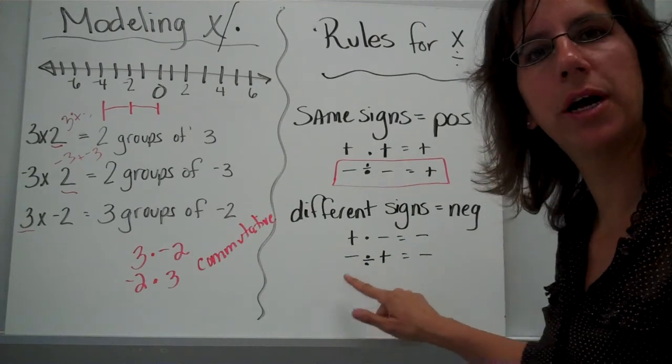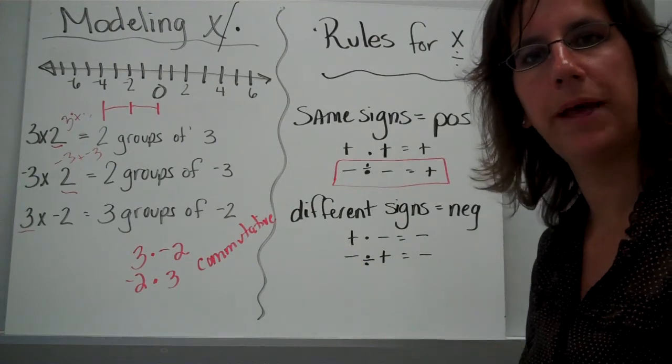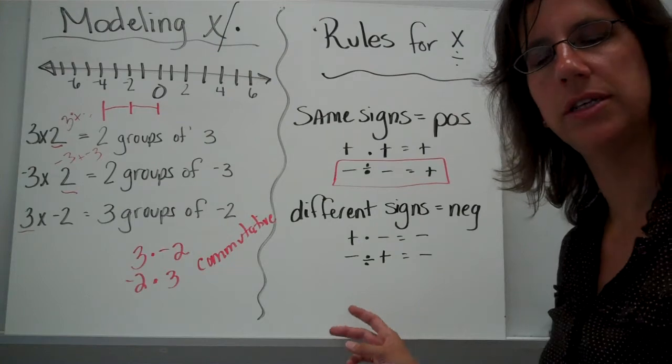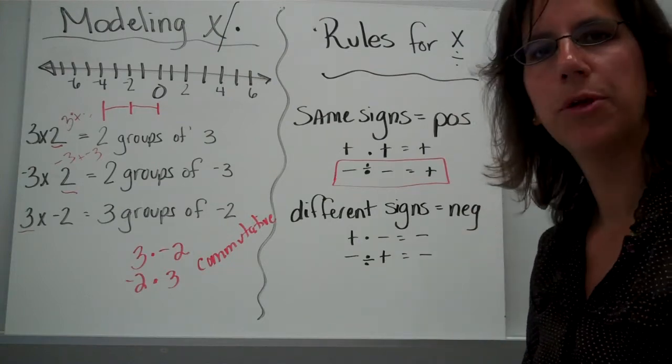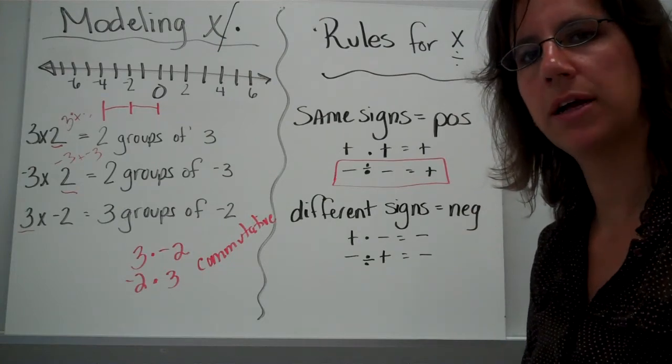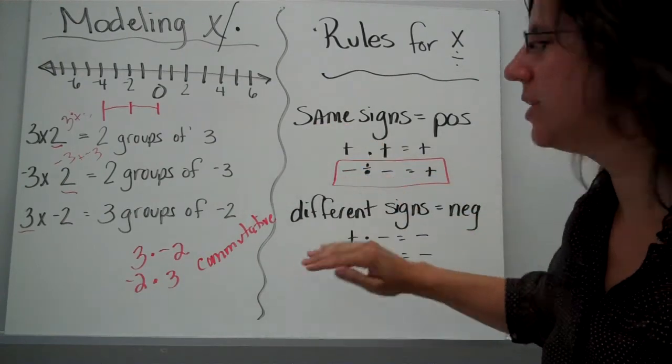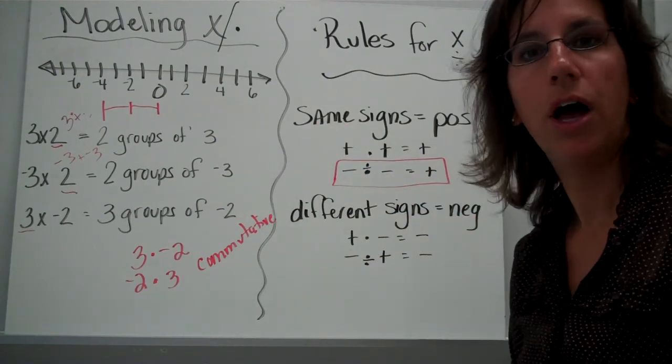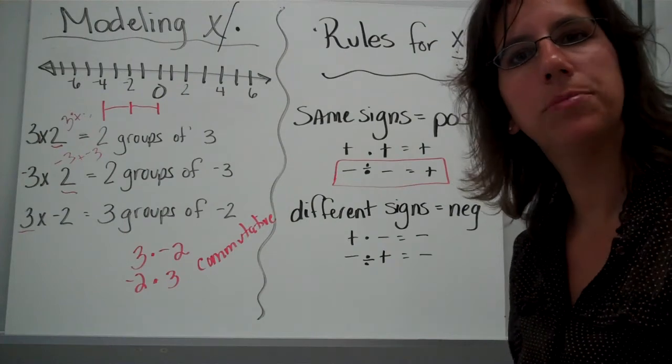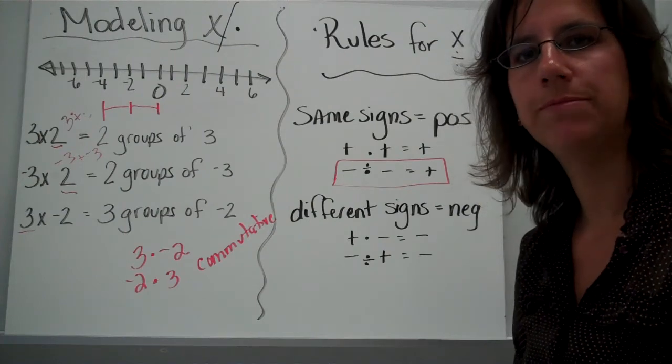Different signs. It does not matter which one comes first, and it doesn't matter whether you're multiplying or dividing. If the signs are different, your answer will be negative. You just have to remember, if the signs are the same, it's positive. If the signs are different, it's negative. Of course, the numbers, you go ahead and multiply and divide just like you normally would.